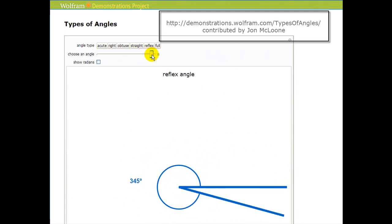But we can classify types of angles as acute, right, obtuse, straight, reflex, and full angles. And I want to illustrate each of these types of angles.